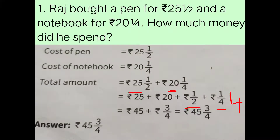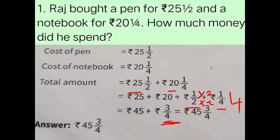For 1/2, we multiply both numerator and denominator by 2: 1 times 2 is 2, and 2 times 2 is 4. So 1/2 becomes 2/4. Now we add 2/4 plus 1/4, which gives 3/4. Then we add the whole numbers: 25 plus 20 equals 45. Combining, we get the mixed fraction 45 and 3/4. So the answer is he has spent rupees 45 and 3/4.